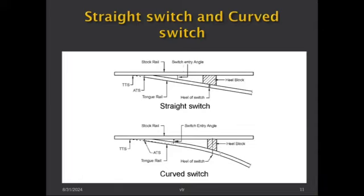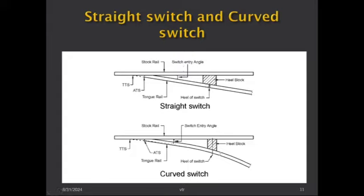There are also straight switches and curved switches. Nowadays we are mostly using curved switches everywhere. Straight switches, where the tongue rail is straight with no curvature, cause a sudden change in direction resulting in jolting and jerk when the train moves to the loop line side. That is why straight switches are not used on main lines or passenger running lines, and if at all are found only in some goods yards.